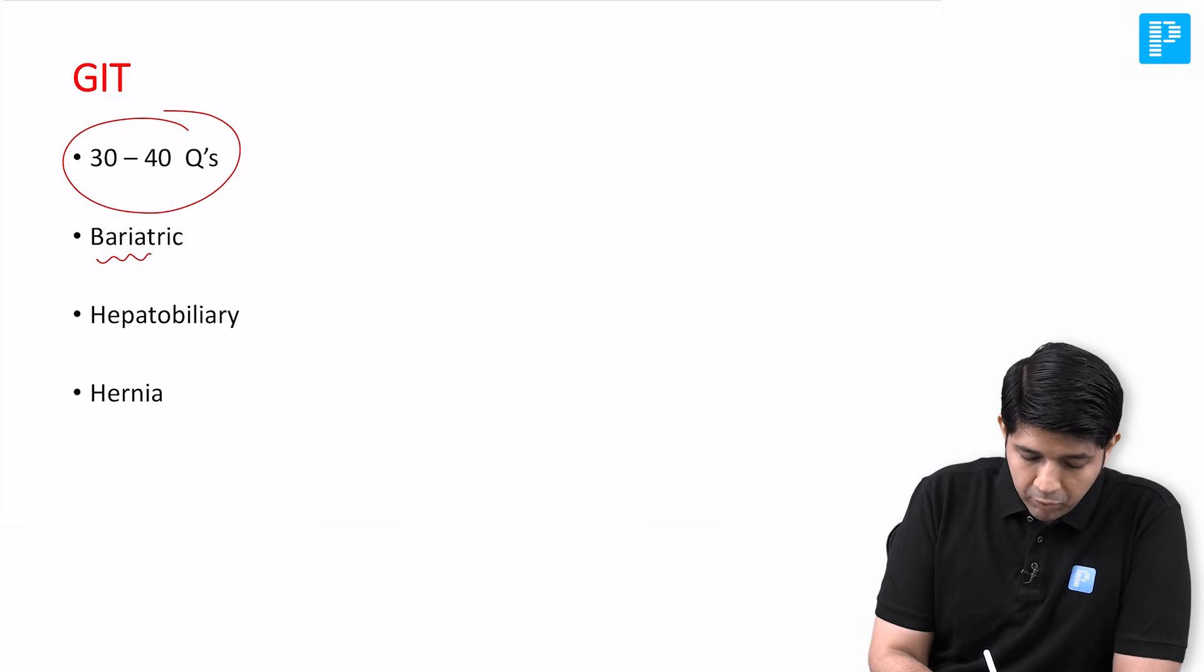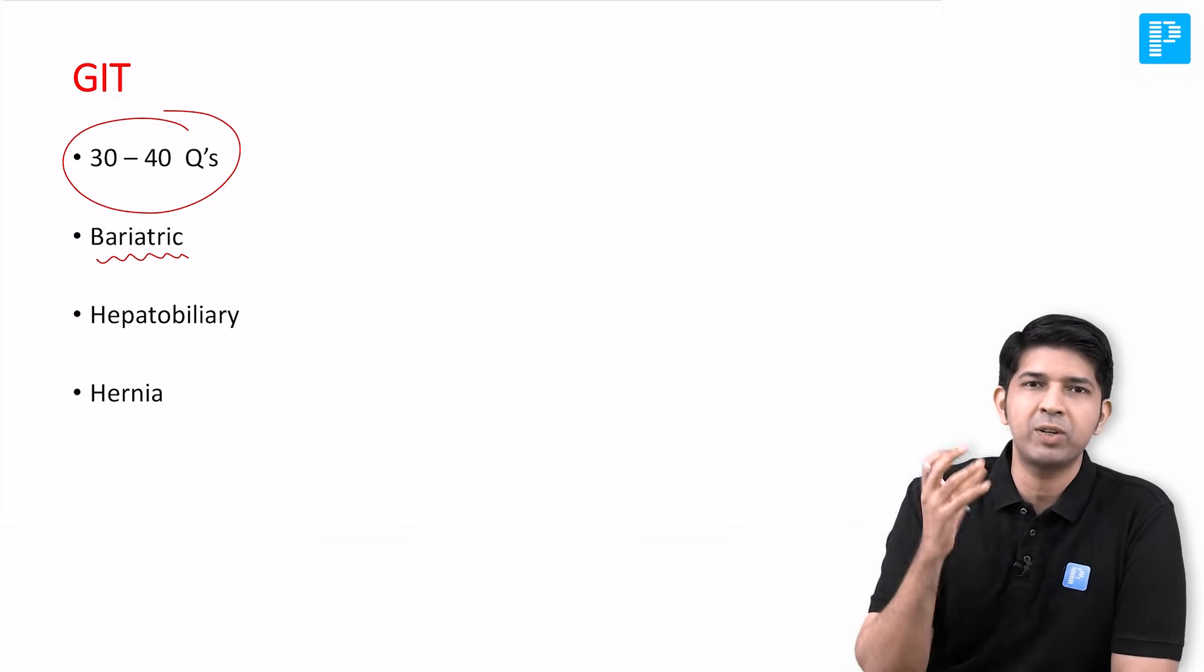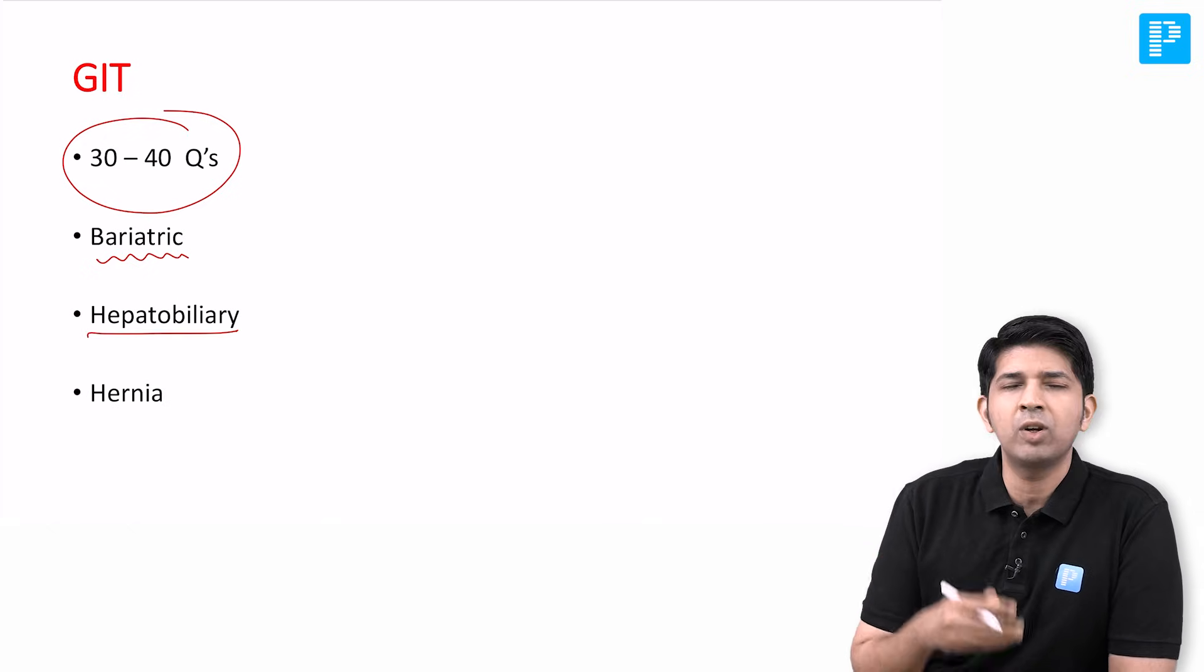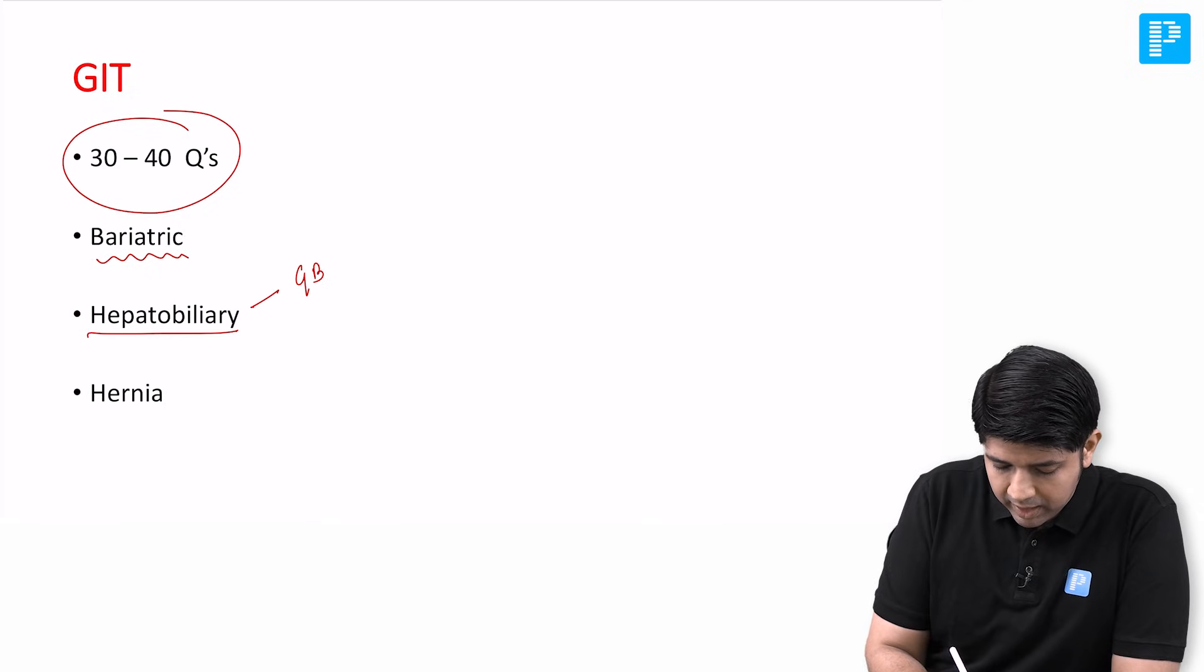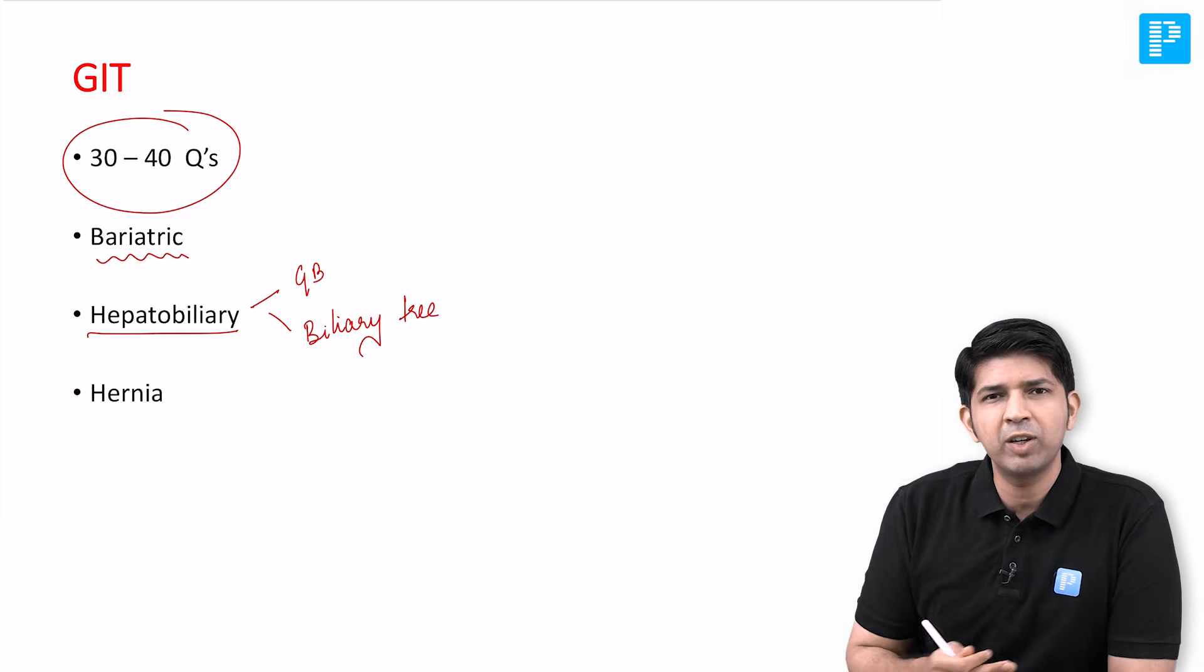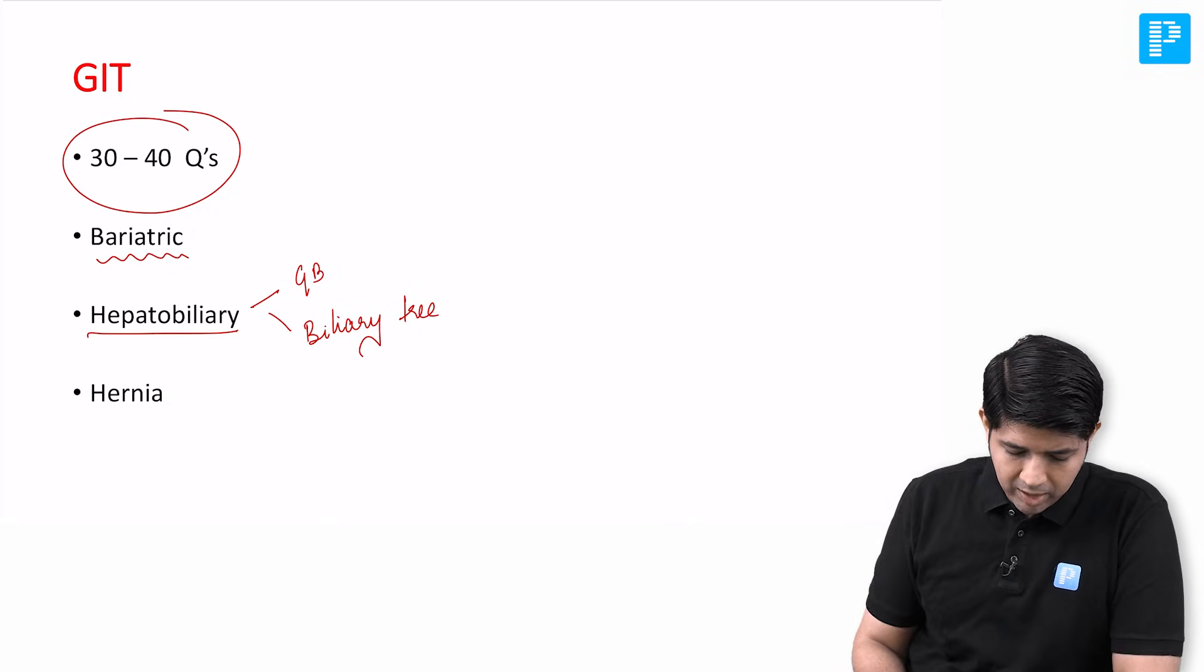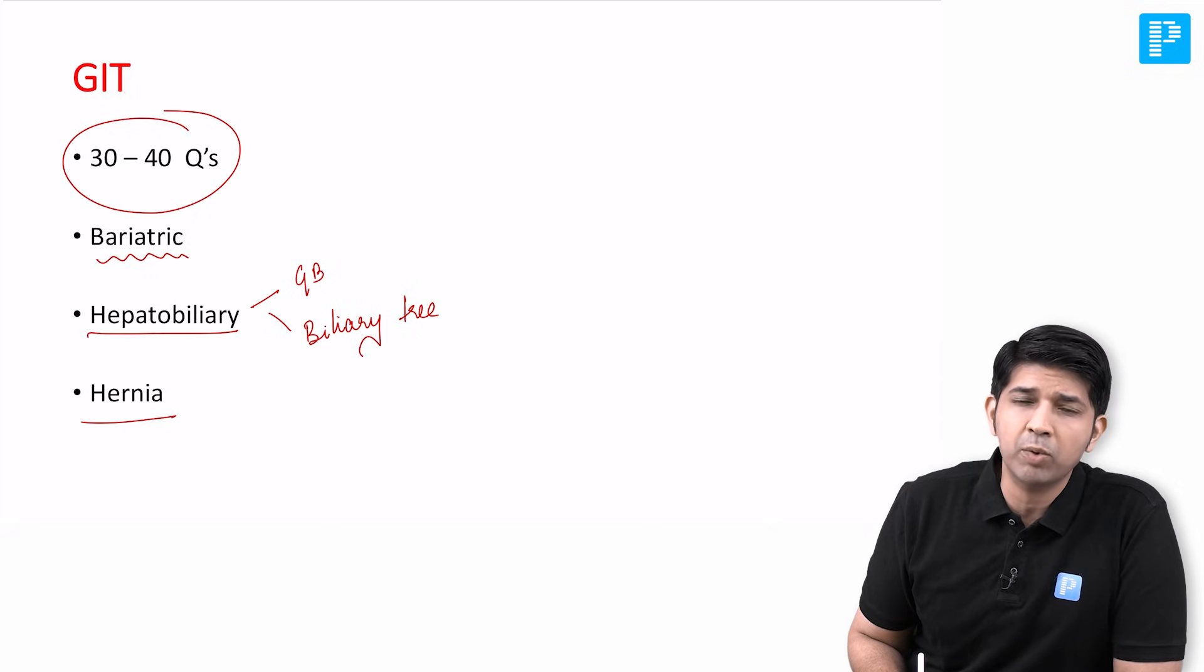The surprising element here was that there was a good number of questions from bariatric surgery - at least about four or five questions. Then as usual, a lot of hepatobiliary questions predominantly from gallbladder and the biliary tree. So this is something similar to what you would have faced even in your NEET PG days. A lot of questions on gallbladder and the biliary tree. What surprised me was that there were a lot of hernia questions.